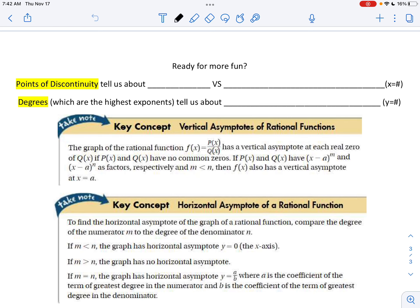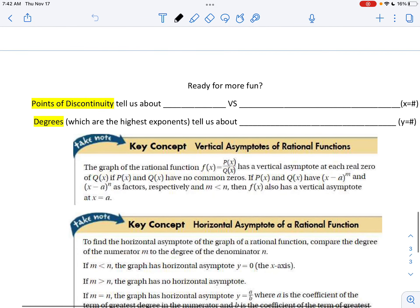So we're going to talk about the next page of notes, and it's going to be for points of discontinuity, and then we'll talk about the degrees of a polynomial. So the points of discontinuity tell us about holes in a graph versus vertical asymptotes, which are x equals. The degrees on the numerator and the denominator tell us about horizontal asymptotes, which are y equals.